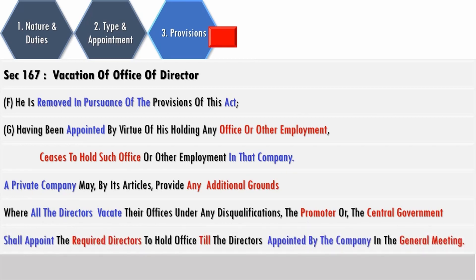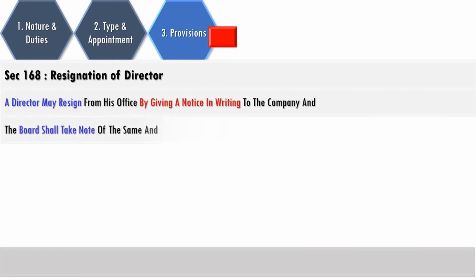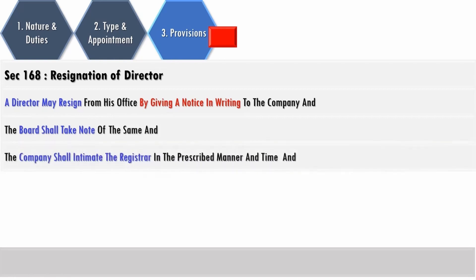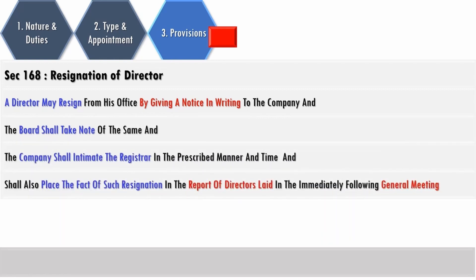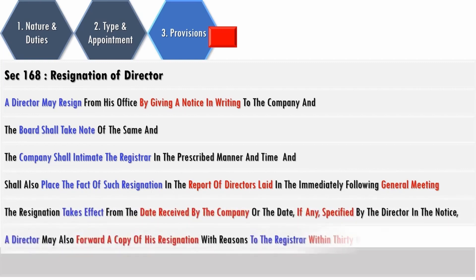Where all directors vacate their offices under a disqualification, the promoter or the central government shall appoint the required directors to hold office till directors are appointed by the company in a general meeting. A director may resign by giving a written notice to the company, and the board shall take note of it and make the necessary filings with the Registrar of Companies. The fact of resignation will be incorporated in the report of directors presented at the immediately following general meeting. Resignation takes effect from the date received by the company or the date mentioned in the resignation. A director is also eligible to forward a copy of their resignation to the Registrar within 30 days.